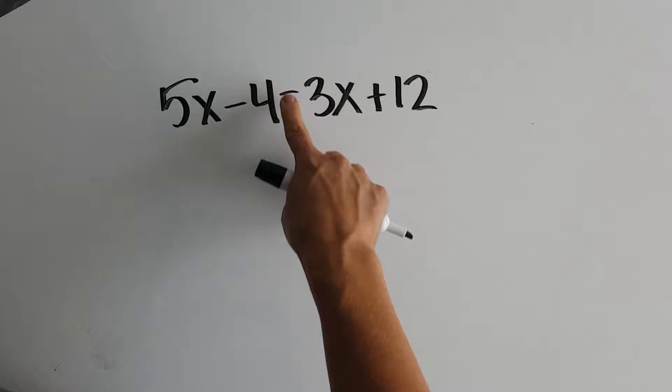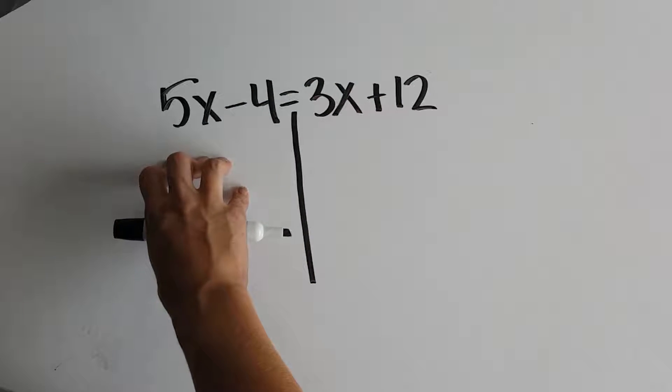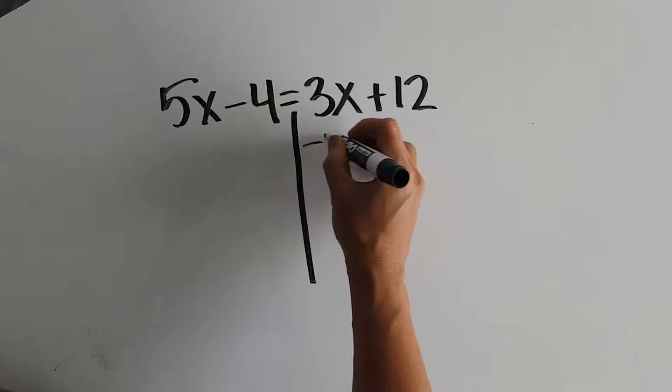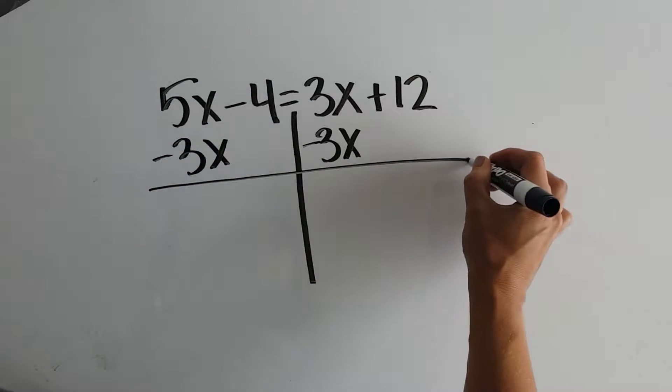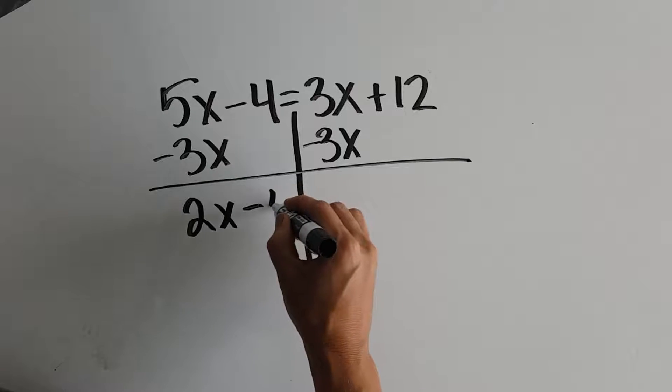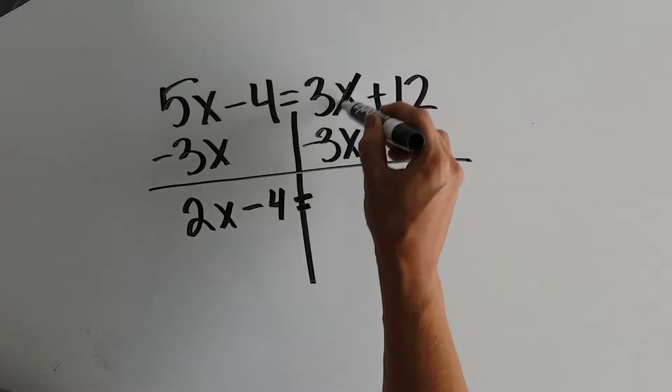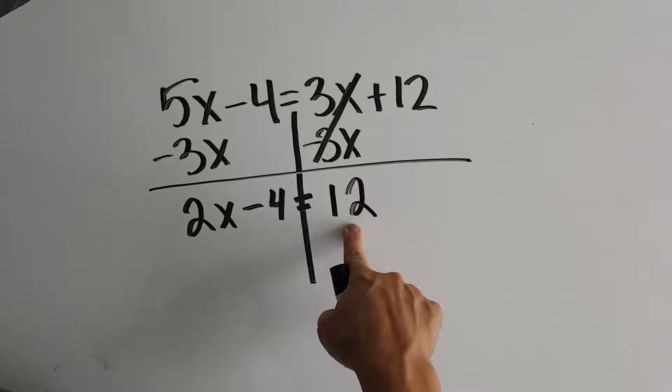I'm going to take this 3x. I need to pick this entire term up and move it over here to collect all the x's together. Well, since this is a positive 3x, we're going to subtract 3x from both sides. So 5x minus 3x gives us 2x. We still have a negative 4 on that side. 3x minus 3x is 0, and we still have a plus 12. So 0 plus 12 is 12.